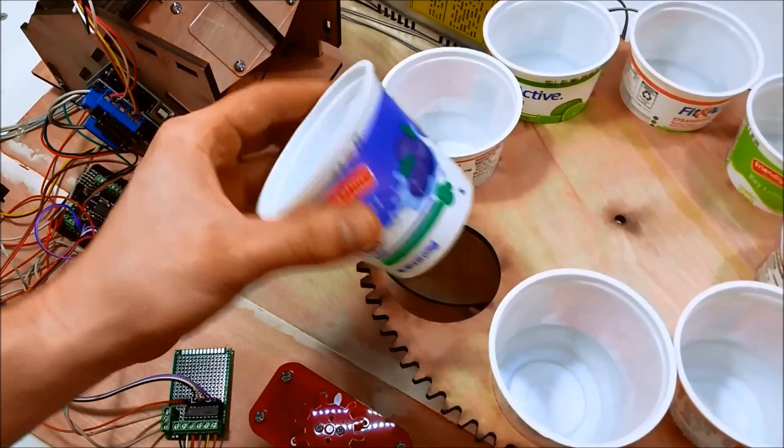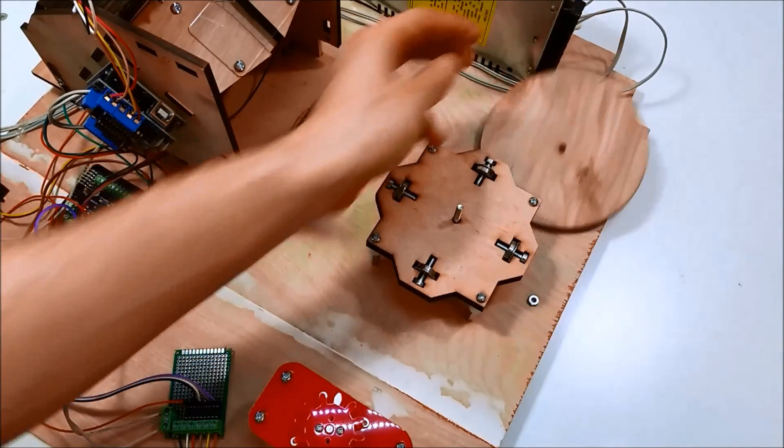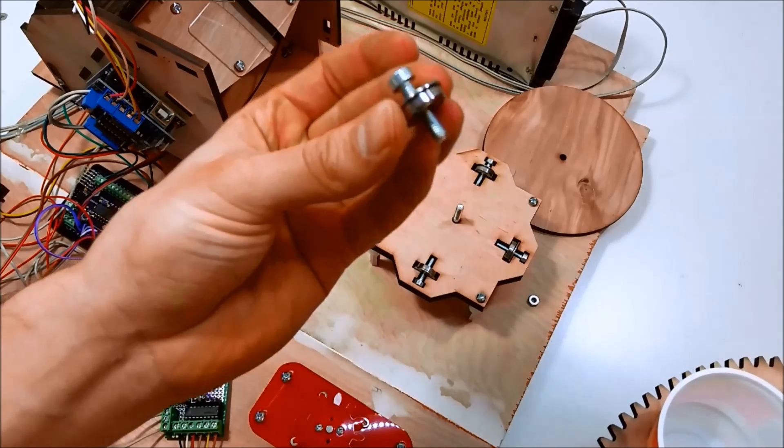The carousel just uses yogurt cups. The cups are from Aldi's, whatever their brand is, Friendly Farms, because everyone's like, oh, you must love yogurt. It's just cups.